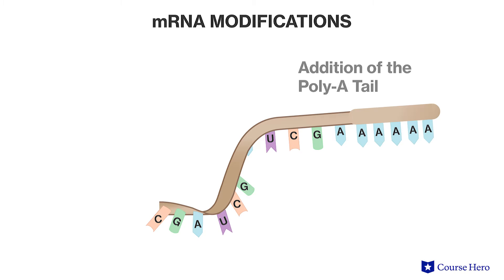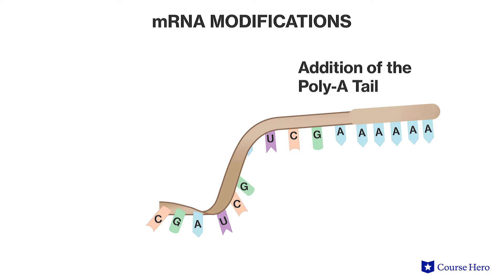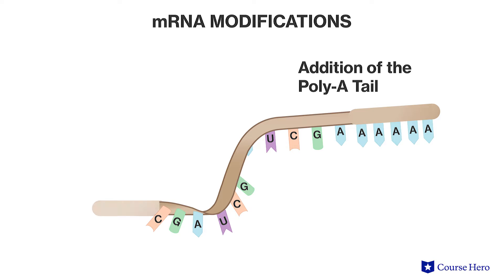The poly-A tail also protects the mRNA from being destroyed too quickly by enzymes that break down RNA. Another modification is the addition of a cap to the five prime end. This cap is a modified form of guanosine triphosphate, or GTP, and helps the mRNA bind with the ribosome.